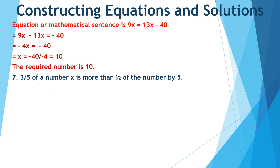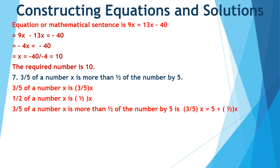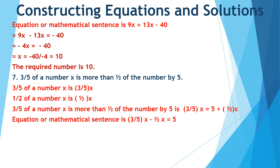3 fifths of a number x is more than half of the number by 5. 3 fifths of a number x is (3/5)x, and half of the number x is (1/2)x. So the mathematical sentence will be (3/5)x is equal to 5 plus (1/2)x, or (3/5)x minus (1/2)x is equal to 5. On solving, we get x equal to 50. So the required number x is equal to 50.